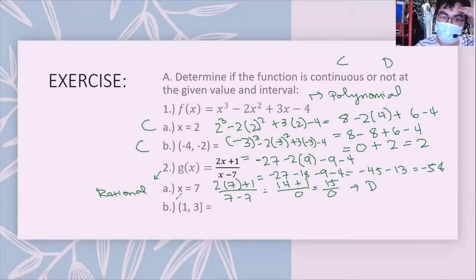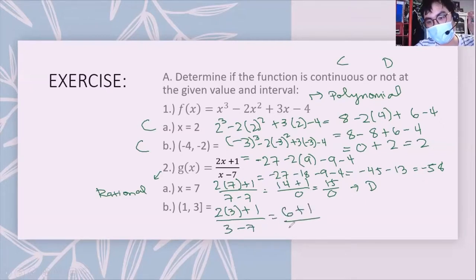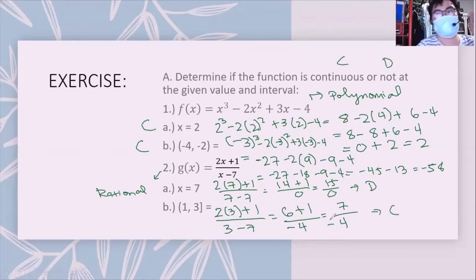For the interval (1, 3], we use x = 3 since it is included. Substituting: 2(3) + 1 = 7 in the numerator, and 3 - 7 = -4 in the denominator, giving 7/(-4). Since the denominator is not zero, the function is continuous on this interval.